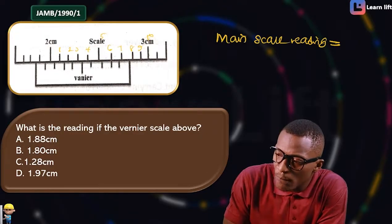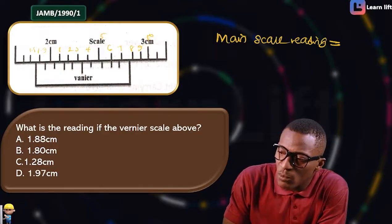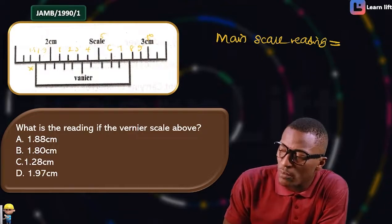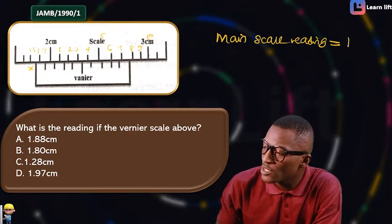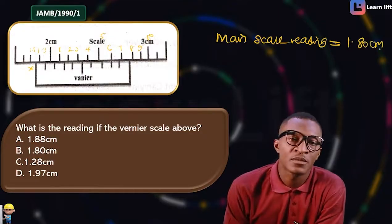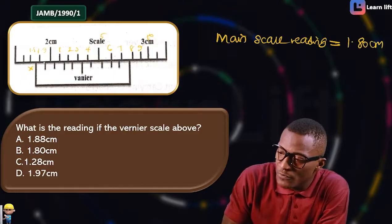...that means here will be 1.9, and here will be 1.8. So I'm going to start my reading before this line, which is 1.8. My reading on the main scale is 1.8 cm. You see how I got the main scale reading — I choose the scale marking just before the vernier scale's zero.